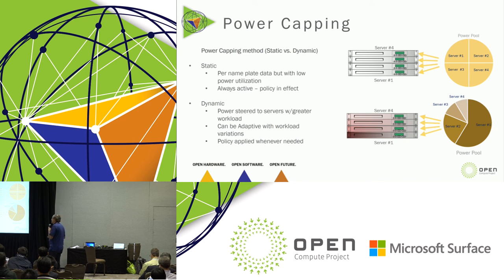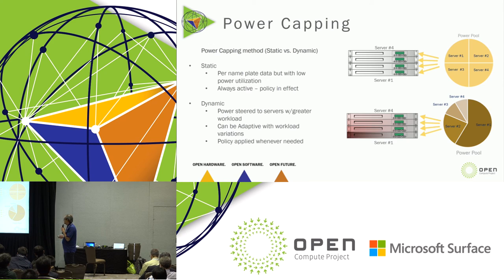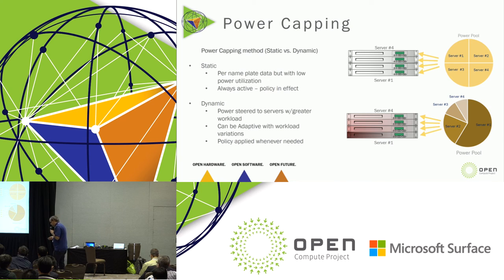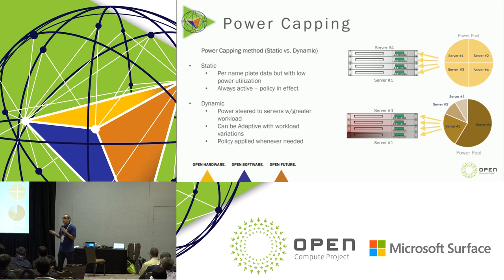The second approach — dynamic power capping — is more efficient at directing power to workloads that need it. We still have the same power budget from the power pool, but we can allocate power based on the need of each workload, as this pie chart shows. The other benefit of dynamic power capping is that the policy is not always active — it's activated only when needed, versus static power capping which is always in effect. So if there is no power or cooling incident, servers can take full advantage of available power to deliver the best performance.